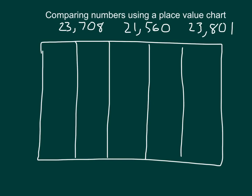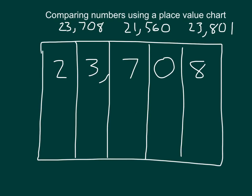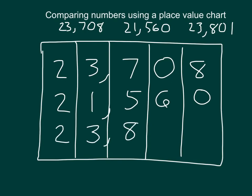Here, I'm going to use a place value chart to compare three numbers. I'm going to model these three numbers in my place value chart as numerals — in other words, I'm going to write their digits. Let's place the first number: 2, 3, 7, 0, 8. The next number is 2, 1, 5, 6, 0. And the last number I'll place into the chart is 2, 3, 8, 0, 1.